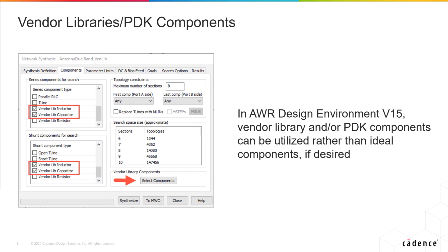Now let's move on to what's new in version 15. If you've used the wizard before, this user interface should look familiar. We're focused on the components tab of the wizard GUI. You'll note that we've added some new checkboxes under the series and shunt components for search. Specifically, we've added vendor library inductor, capacitor, and resistor. For the example I'm going to show, we're only using vendor library inductors and capacitors, but you can use resistors as well.